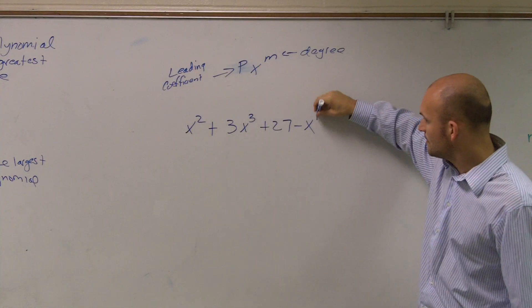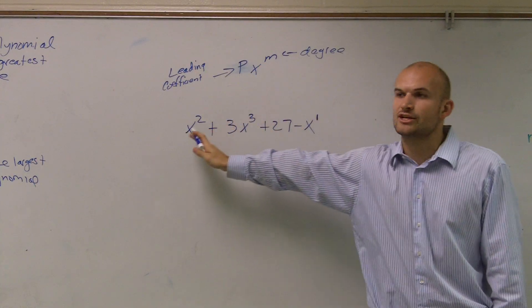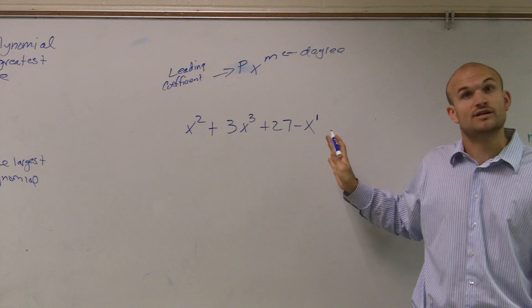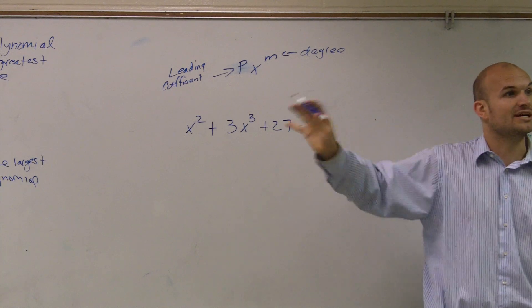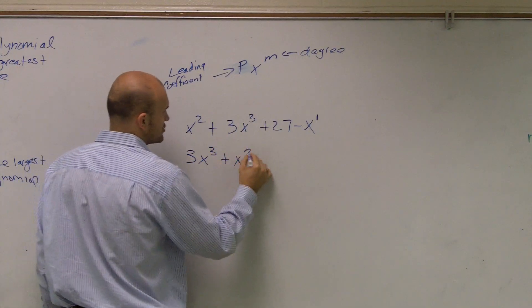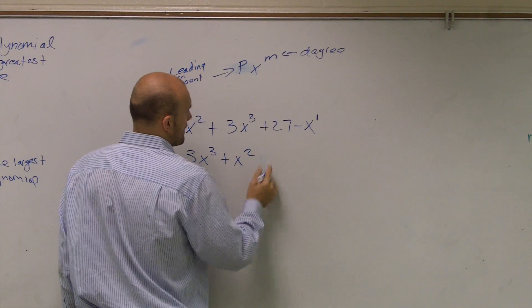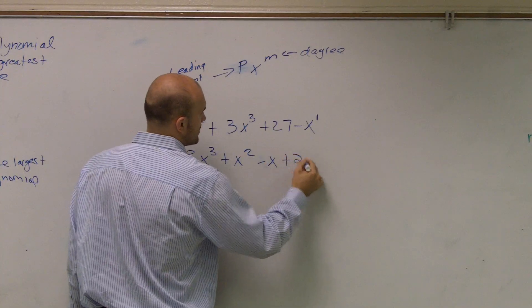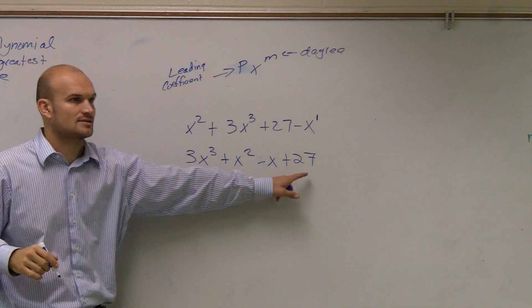So I look at this and I have a couple of degrees here: two, three, there's a one there. Is this in greatest to least order of degrees? No. So the first thing I need to do is rewrite it in descending order. So, 3x³ + x² - x + 27. Our constant or number is always going to be last.